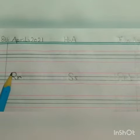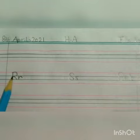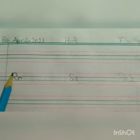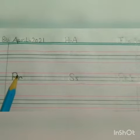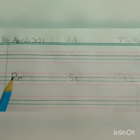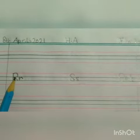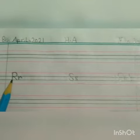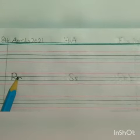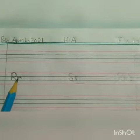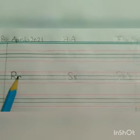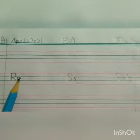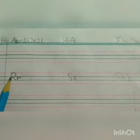Okay students, first you draw a straight line and make a semicircle and then draw a slanting line — it's R. Now draw a straight line and make a hook — it's R.